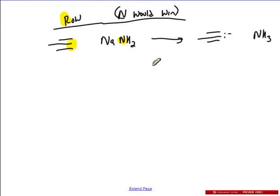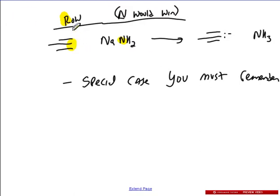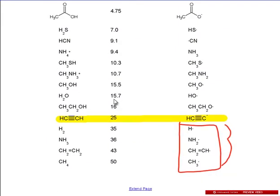And this is a special case. This is a special case that you must remember. There's no way around it. This is an exception to the rule. So normally, when you're looking at atoms on the same row, the one that's more electronegative would win. But this is the only special case that you need to remember for yourself. All right. Because take a look at the numbers. Nitrogen is 36, carbon of an alkyne is 25. Notice that nitrogen is more acidic than any other carbon type, just alkyne. That's all you have to worry about.